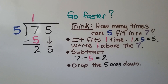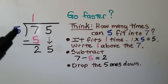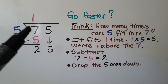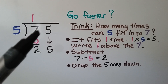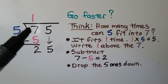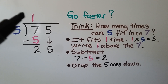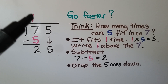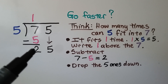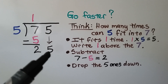Is there a way to go faster? Yes, there is. We have seventy-five divided by five. We just think: how many times can five fit into seven? We don't necessarily look at it as seven tens or seventy-five. It fits in one time, so we put a one above the seven. We do five times one, which is five. We subtract and get a two, and now we just drop the five down.